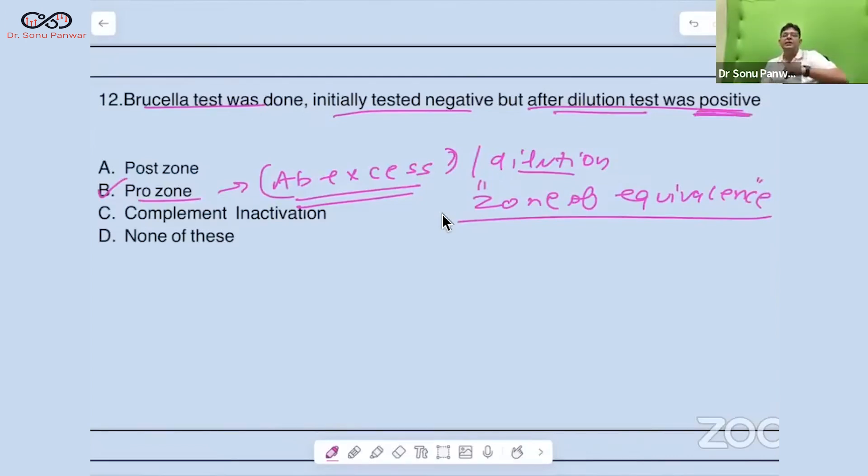Can you tell me the name of the test? For Brucella, which test do we do? We do SAT. SAT stands for Standard Agglutination Test.